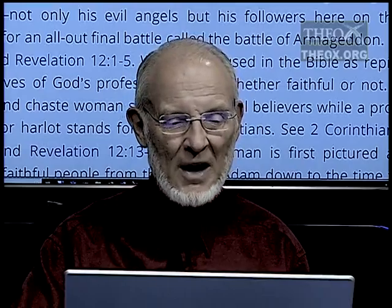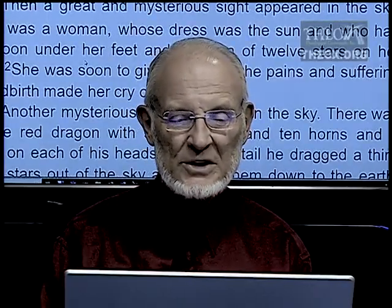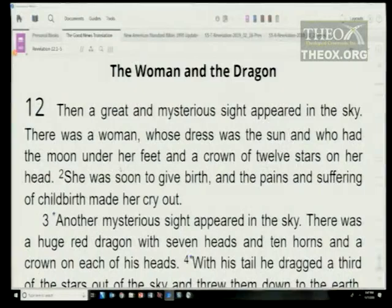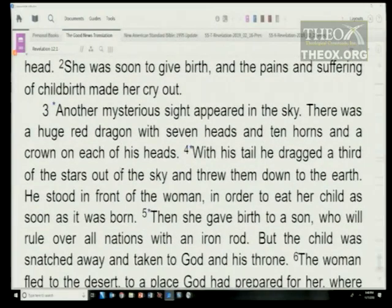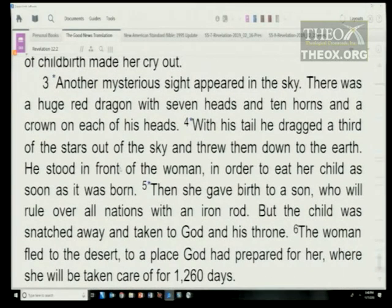Look at Revelation 12:1-5. A great mysterious sight appeared in the sky — a woman whose dress was the sun, with the moon under her feet and a crown of 12 stars on her head, soon to give birth. Another sight appeared: a huge red dragon with seven heads and ten horns and a crown on each head. With his tail he dragged a third of the stars out of the sky. He stood in front of the woman to eat her child as soon as it was born. She gave birth to a son who will rule over all nations with an iron rod, but the child was snatched away and taken to God and his throne.